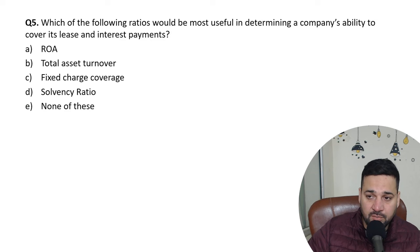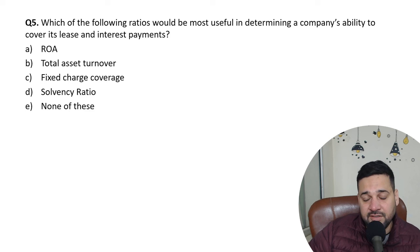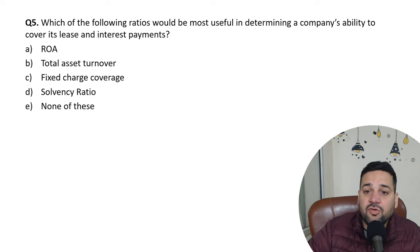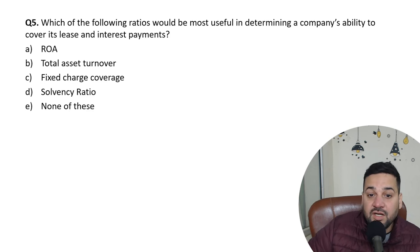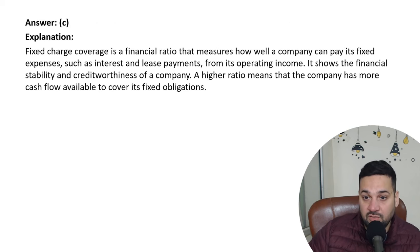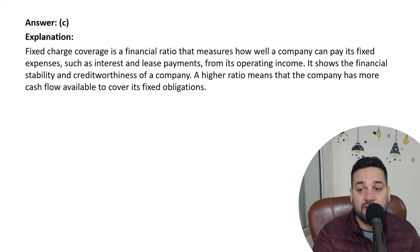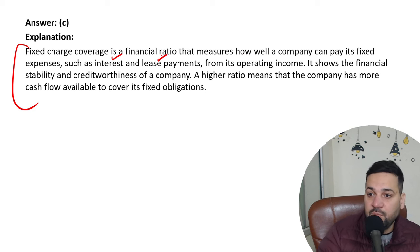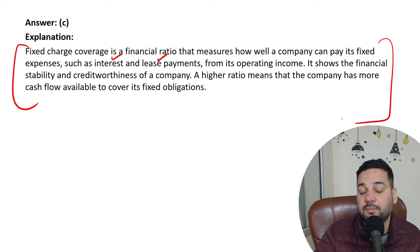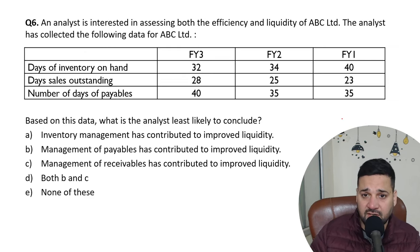Which of the following ratios would be most useful in determining a company's ability to cover its lease and interest payments — this is directly from a previous paper. The answer is the fixed charge coverage ratio. Fixed charge coverage is the financial ratio that measures how well a company can pay its fixed expenses such as interest and lease payments from operating income. It tells you how much money the company has to cover its fixed expenses.